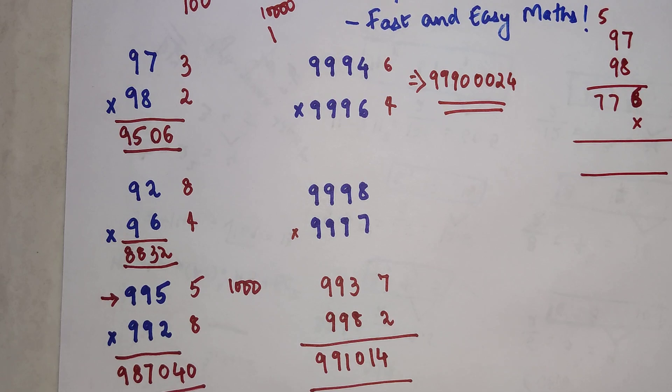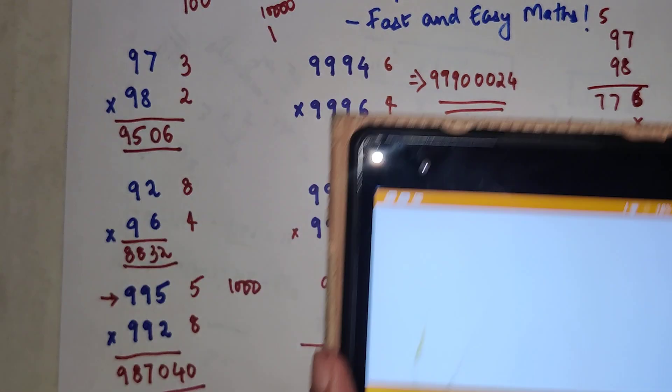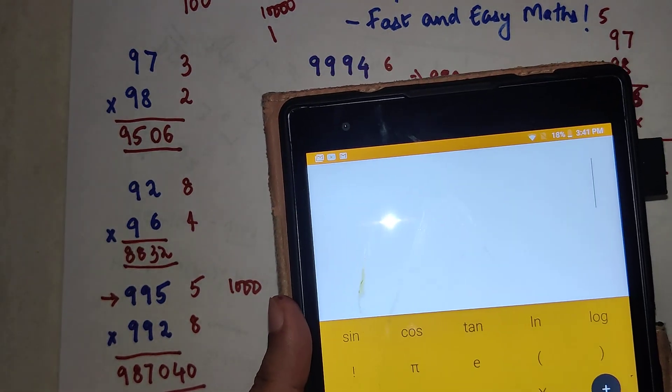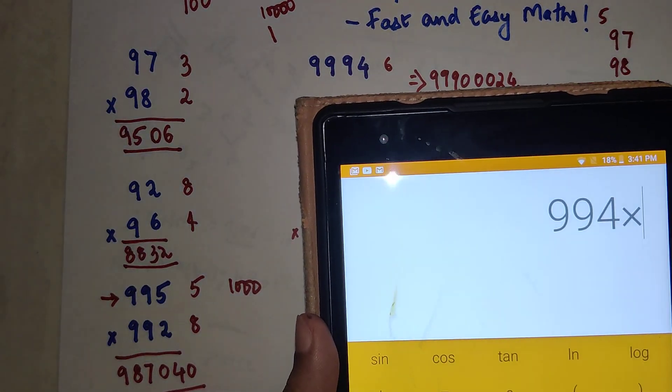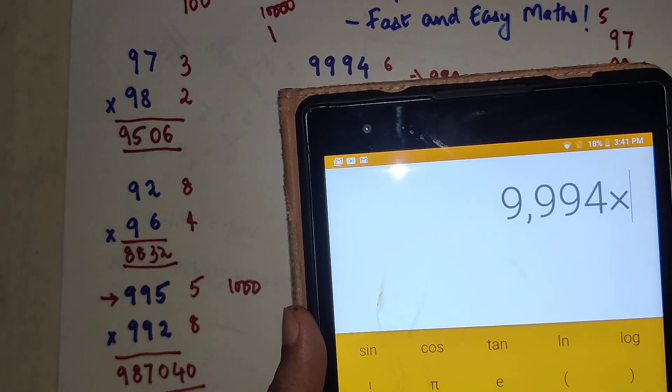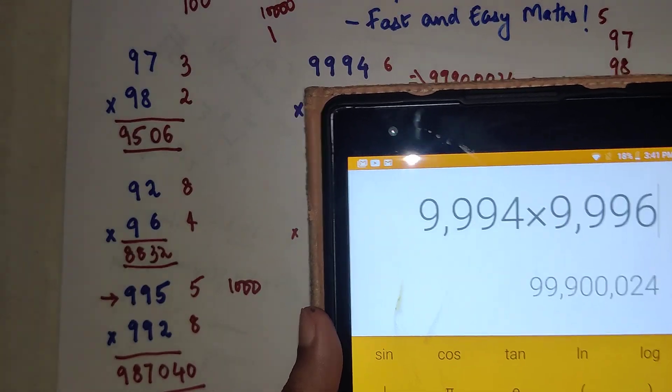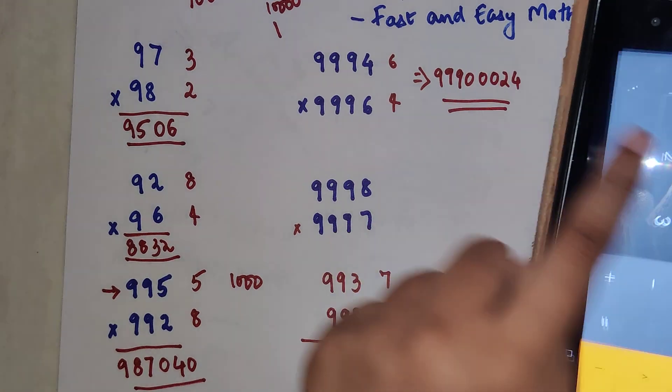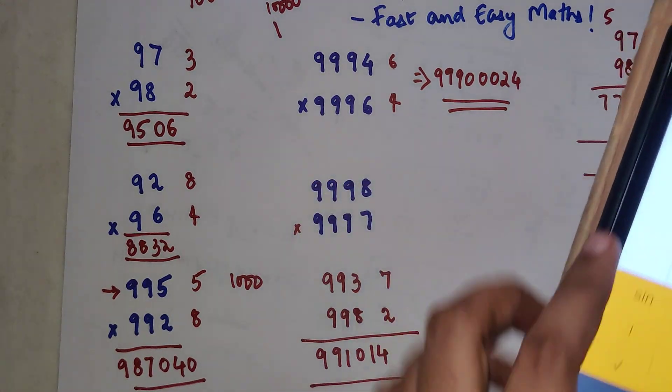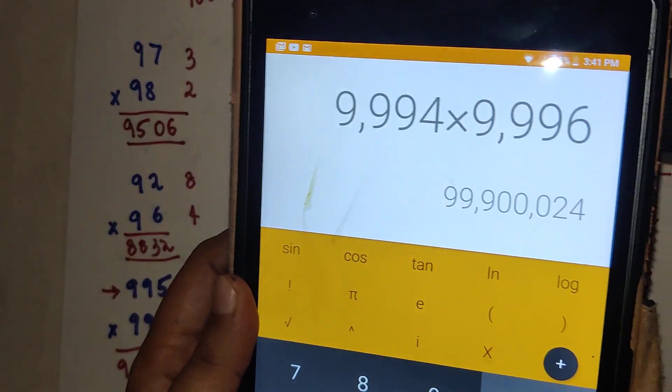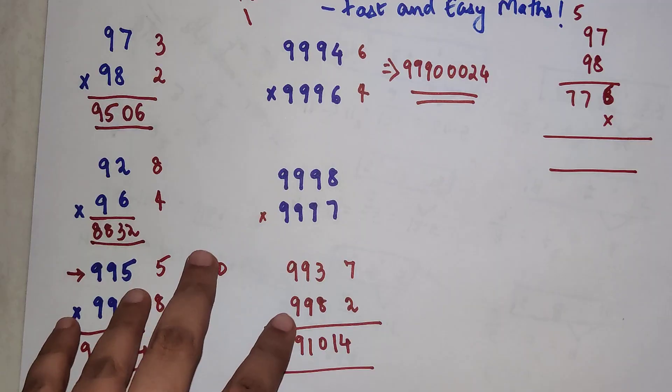In case you have doubts, we can check this with the help of a calculator. So here we had to multiply 9994 into 9996, and your answer is 9990, 9990024. Sorry, I'm extremely sorry, I'm literally having a little bit of throat infection.